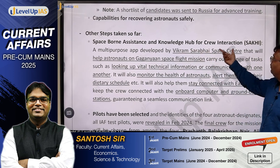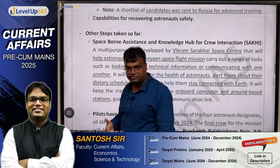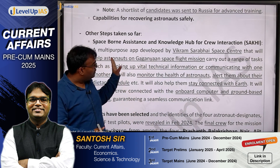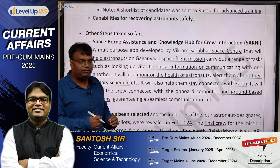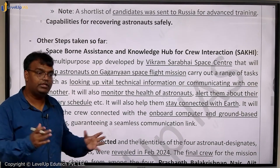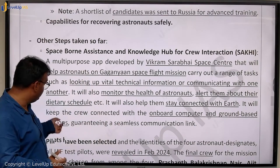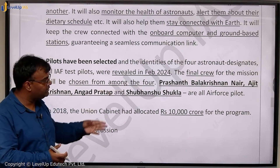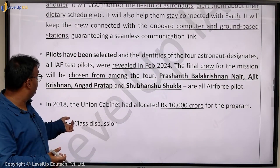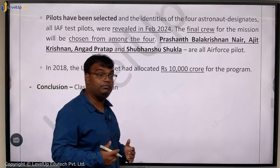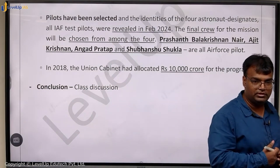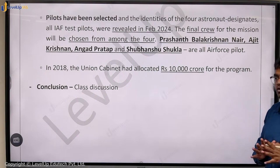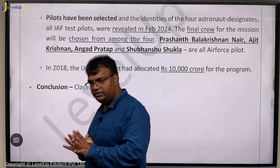Other things done for Gaganyaan: SAKHI — Space-borne Assistance and Knowledge Hub for crew Interaction — is an app developed by Vikram Sarabhai Space Centre to help astronauts keep track of vital information like body temperature, pressure, and surrounding situation. Four pilots were named in February 2024. Way back in 2018, when Prime Minister Modi first announced the Gaganyaan mission, 10,000 crore rupees were allocated as budget for this project.